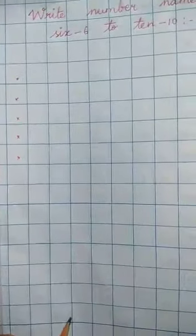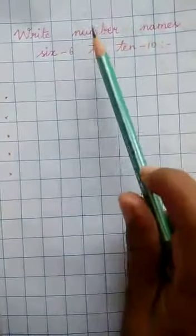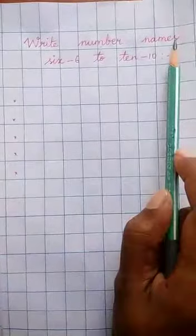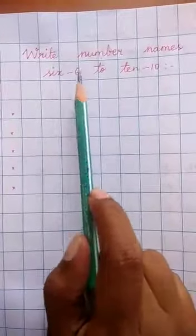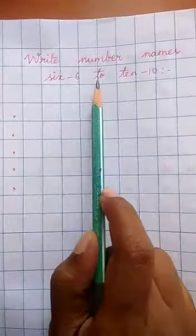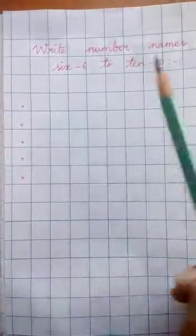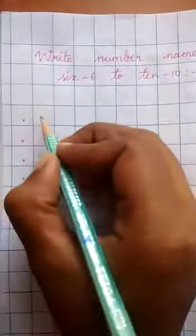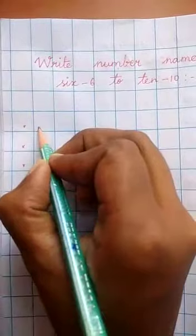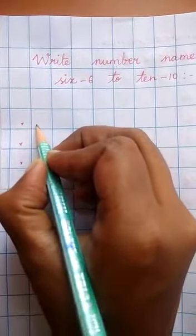Yes children. Next, we are going to revise the number names from number 6, S-I-X, 6 to 10, T-E-N. Let's start children. First, number 6.